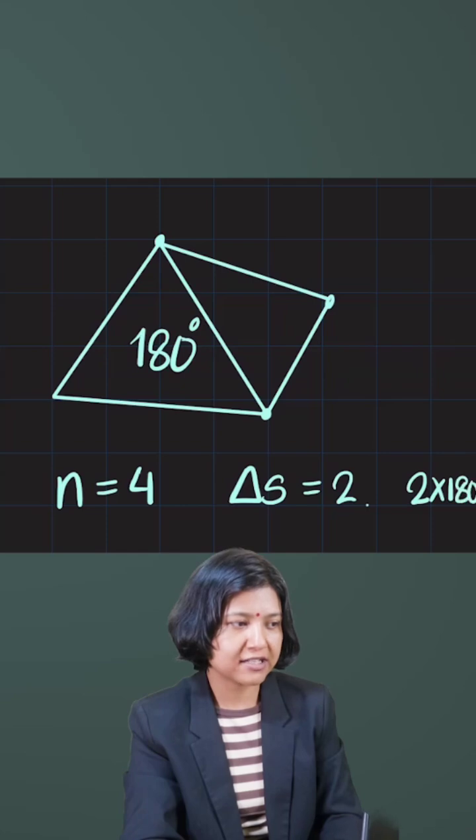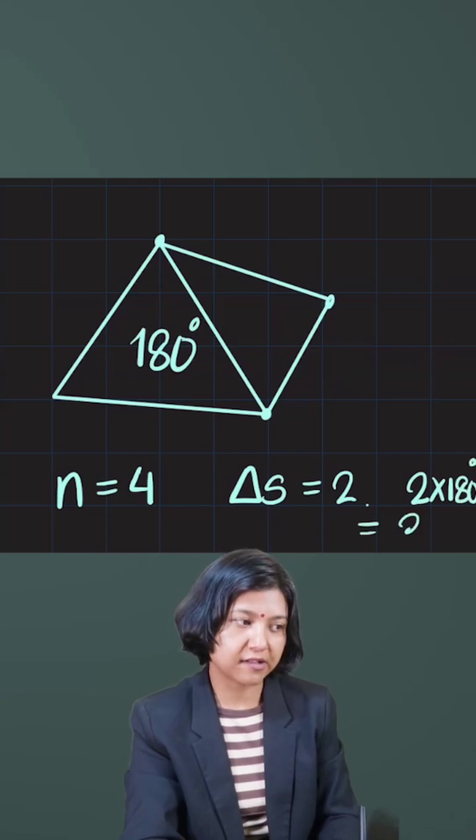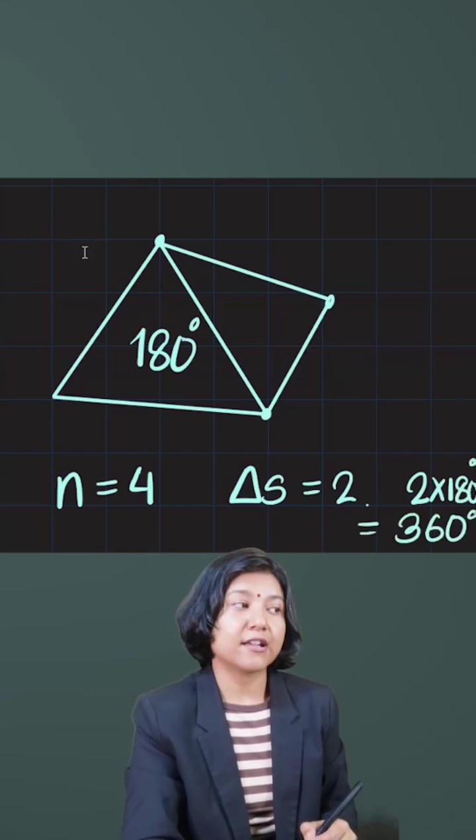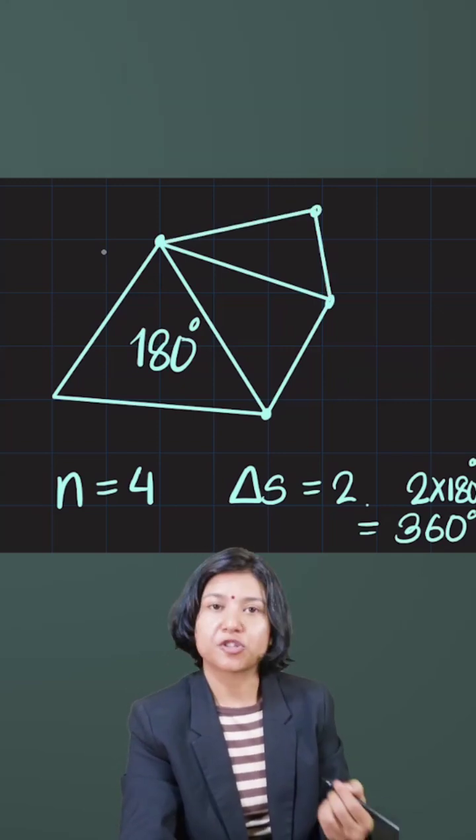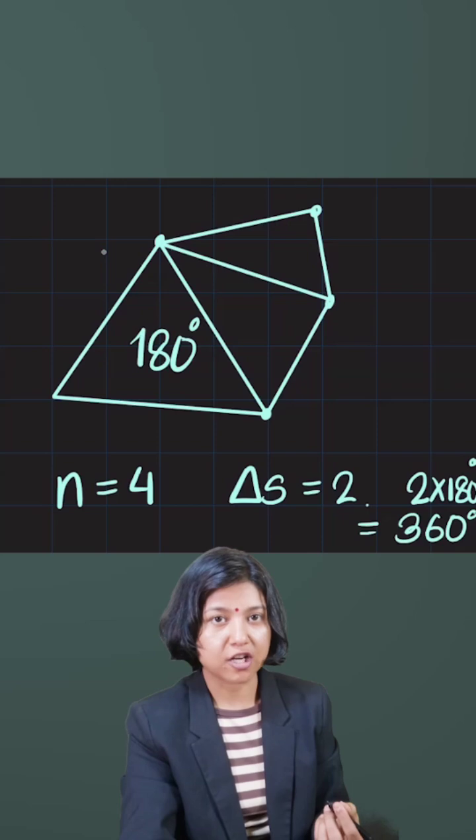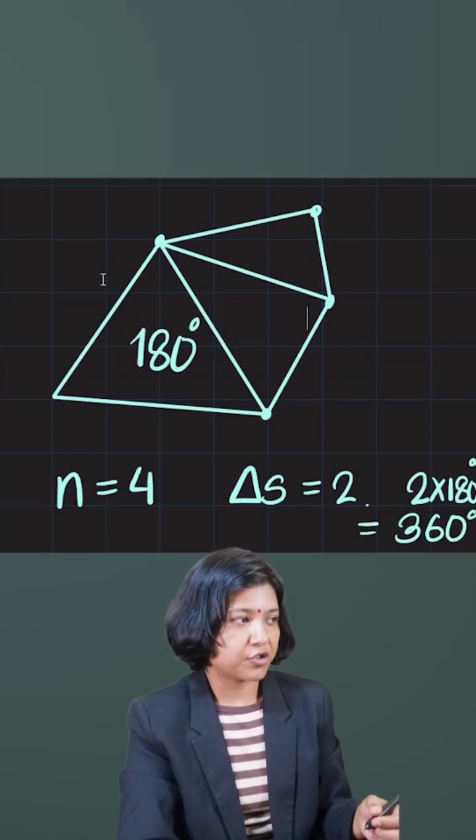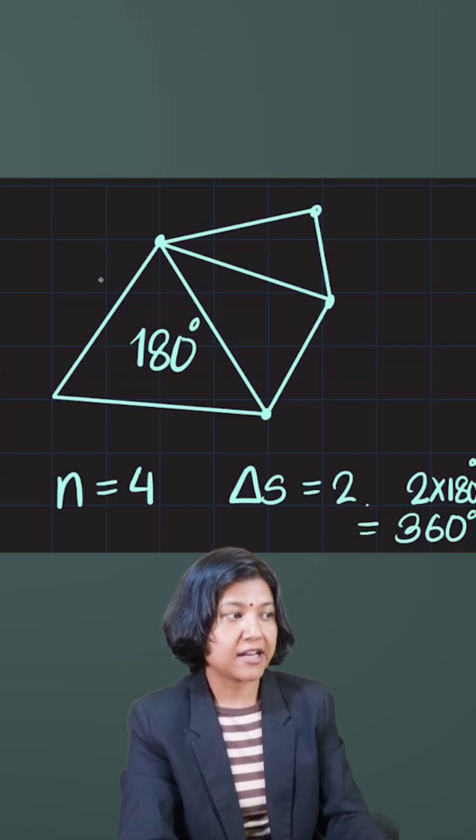Now imagine there is another point coming up, so let's say there is a fifth point here. What happens? I get a new shape, or I just call this as pentagon because there are five sides. Now the trick is, I have five sides, then number of triangles formed is three.